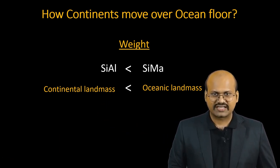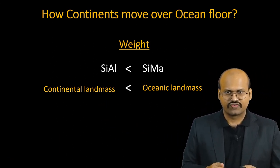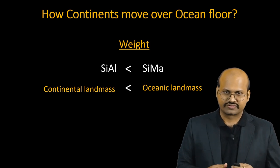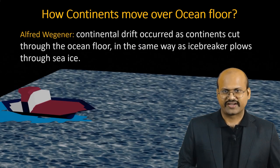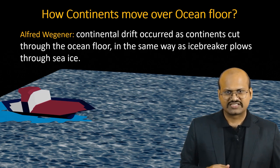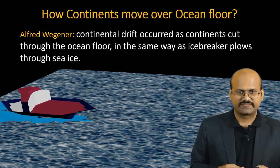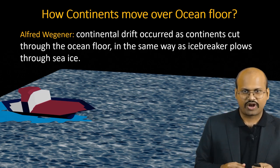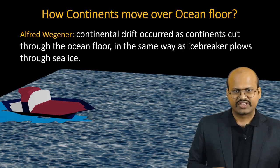Since the continents are light in weight, they can float over oceanic floors. Wegener defined that the continents cut through the ocean floor in the same way as icebreaker ships plow through sea ice. We can see in the figure an icebreaker ship moving over a frozen ice sheet, breaking it and leaving a trail of broken ice behind it.